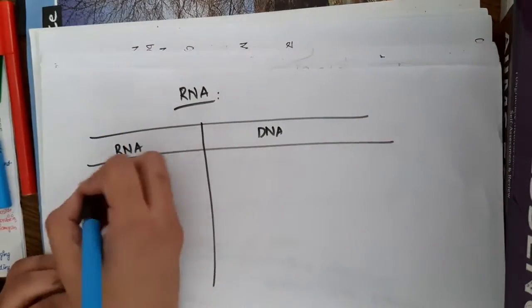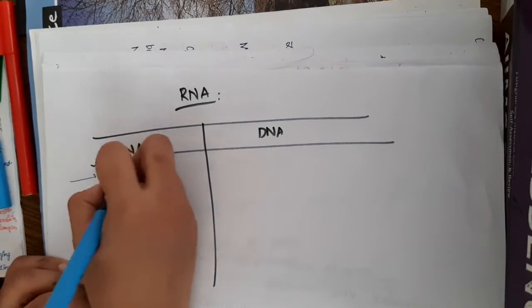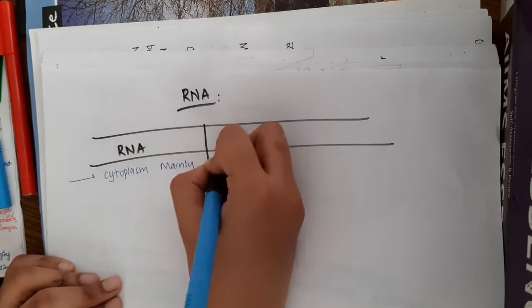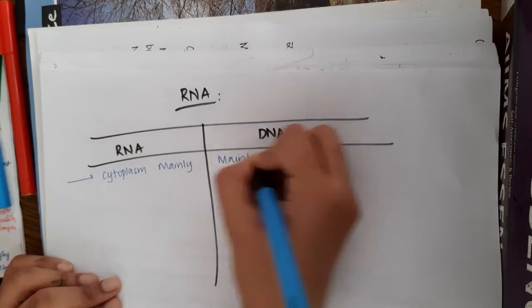RNA is seen in cytoplasm mainly, whereas DNA is mainly present in nucleus.